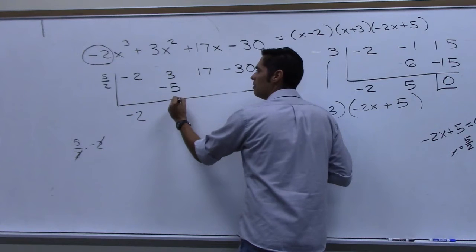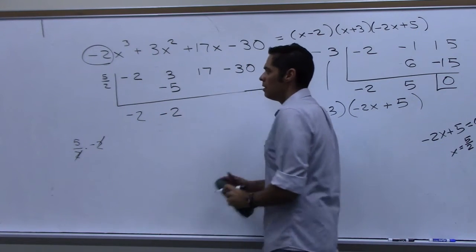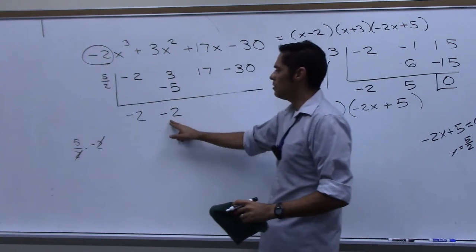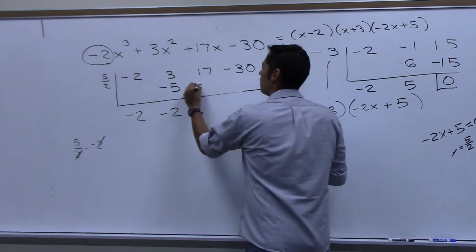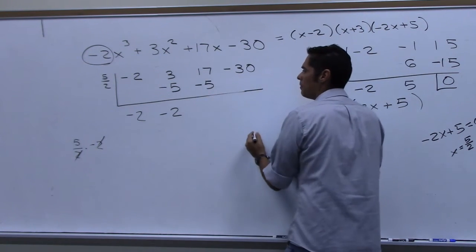I add down, I get negative two. What's five halves times negative two? Negative five again, right? Add down, what do you get? Twelve.